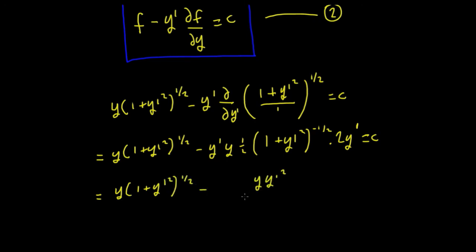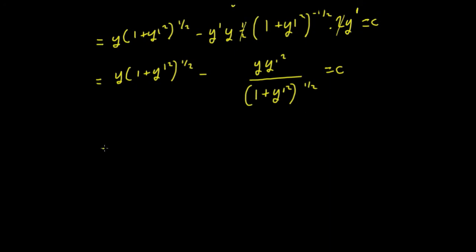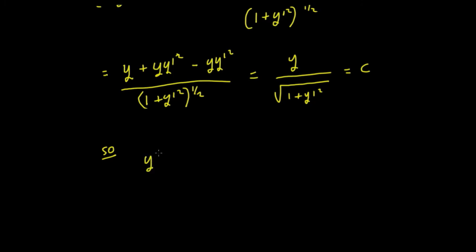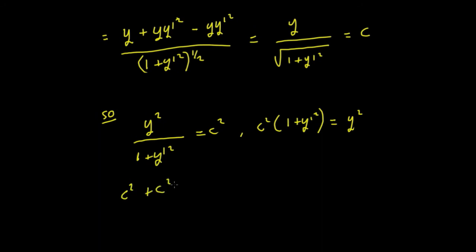Leaving the first part as is and simplifying the second part, with a common denominator we get: y plus y·y′² minus y·y′², all upon (1 plus y′²)^(1/2). That simplifies to y divided by the root of (1 plus y′²) equals a constant. We can then write y² (1 plus y′²) equals c², rearranging to c² (1 plus y′²) equals y², and then c² plus c²y′² equals y², so y′² equals (y² minus c²) upon c².